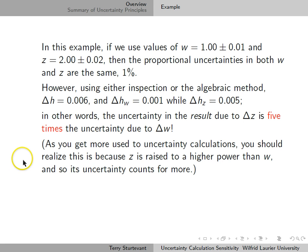As you get more used to uncertainty calculations, you should realize that this is because z is raised to a higher power than w, and so its uncertainty counts for more.